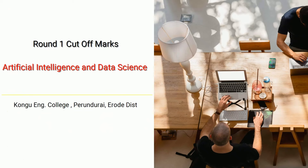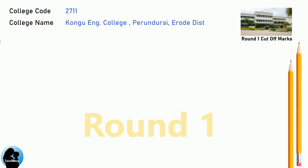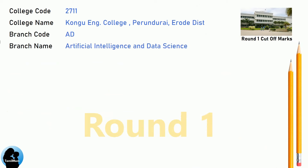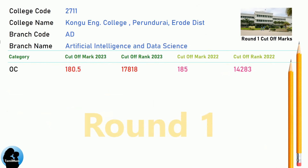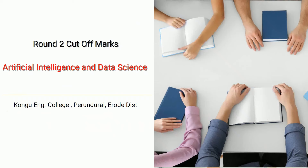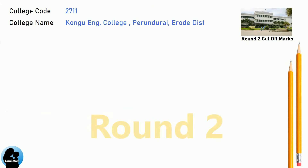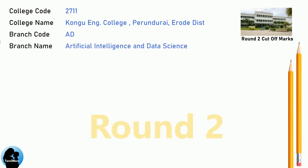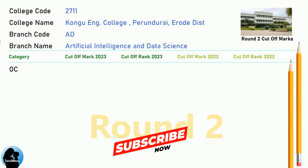DNA Round 1 Cut-Off for Kongu Engineering College in Artificial Intelligence and Data Science. DNA Cut-Off for Kongu Engineering College in Artificial Intelligence and Data Science.